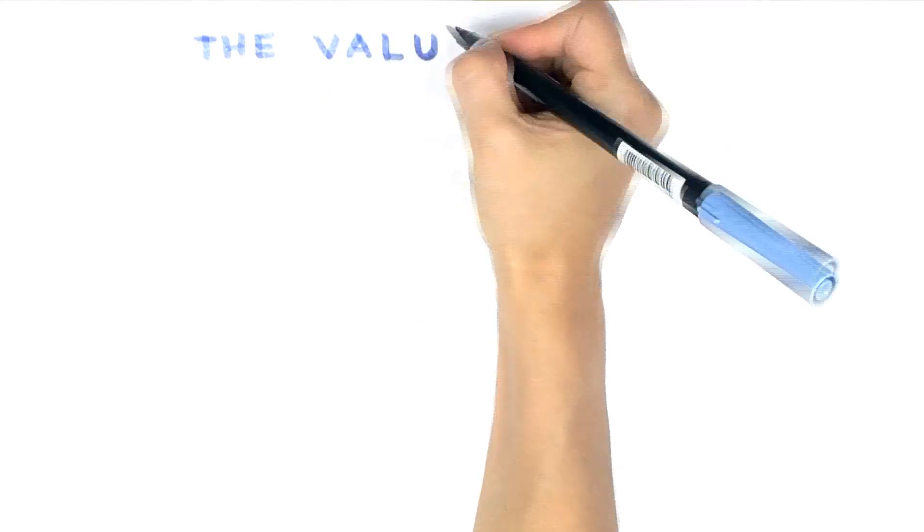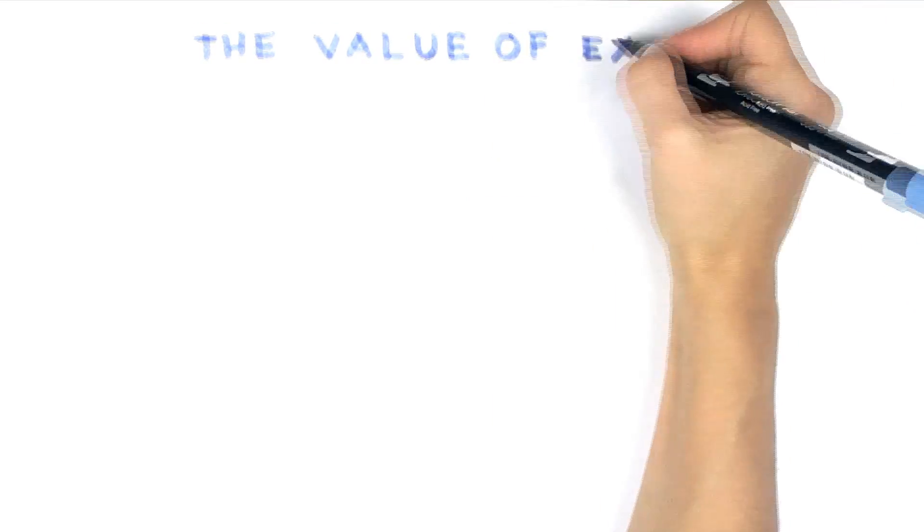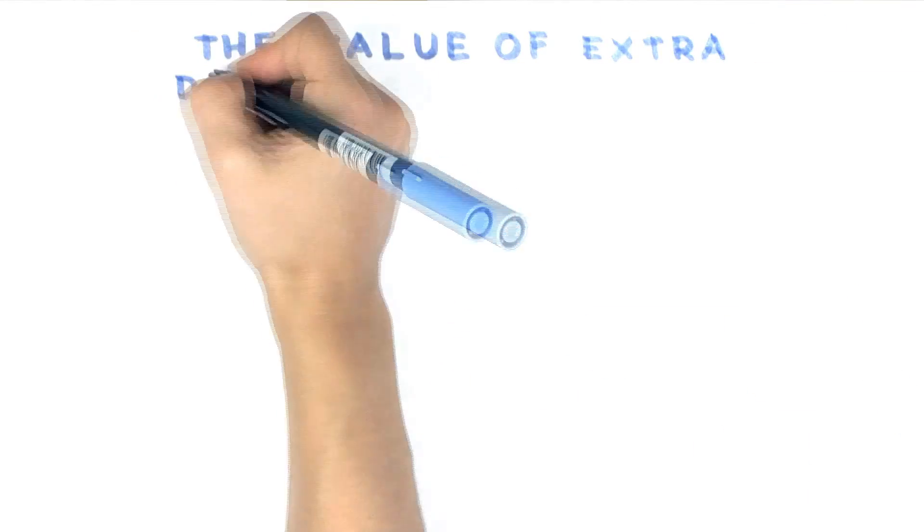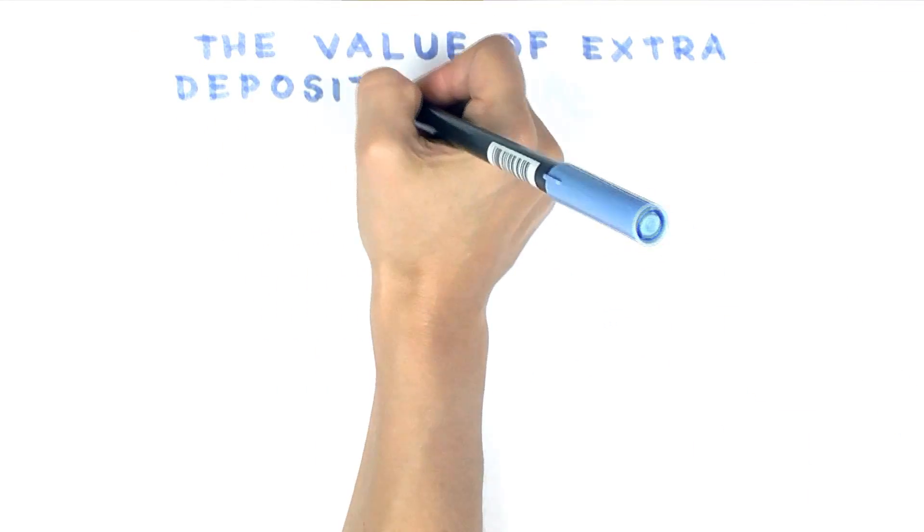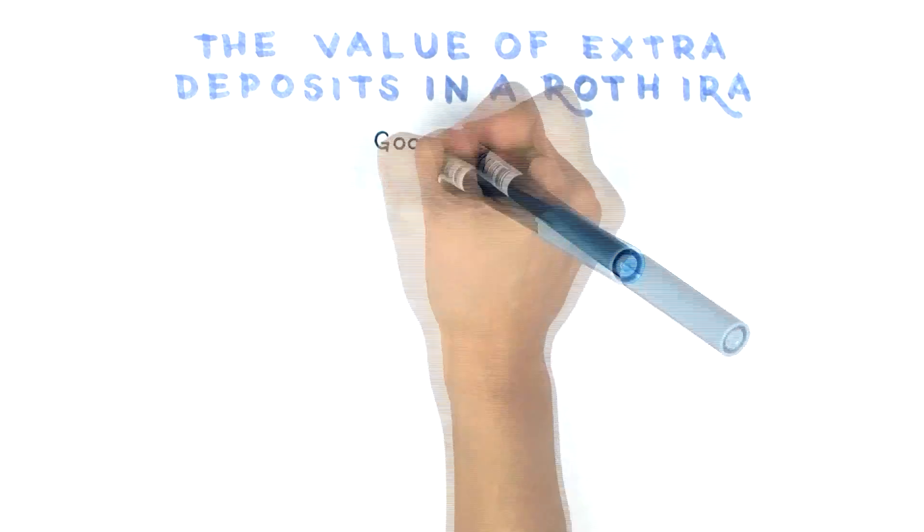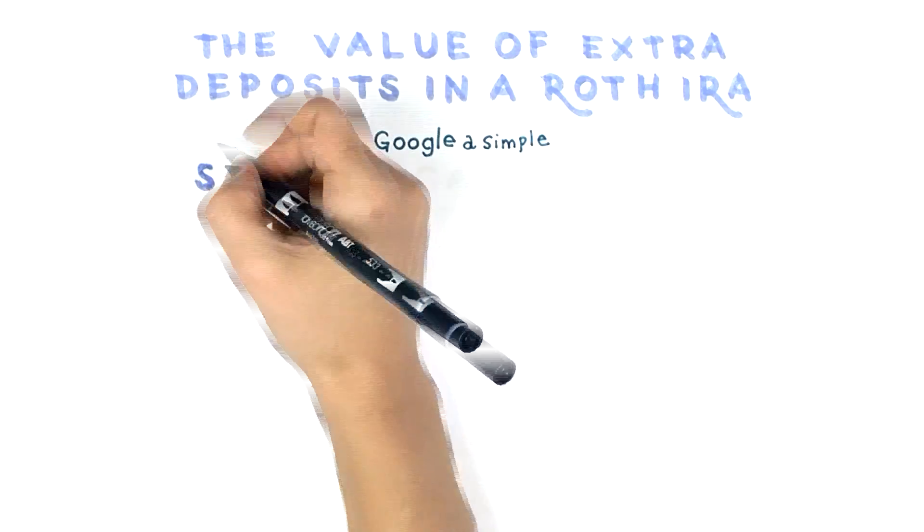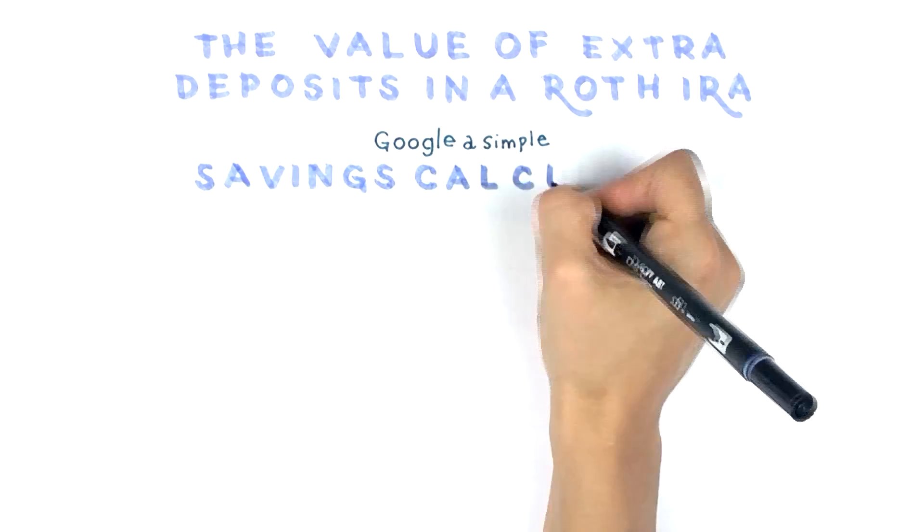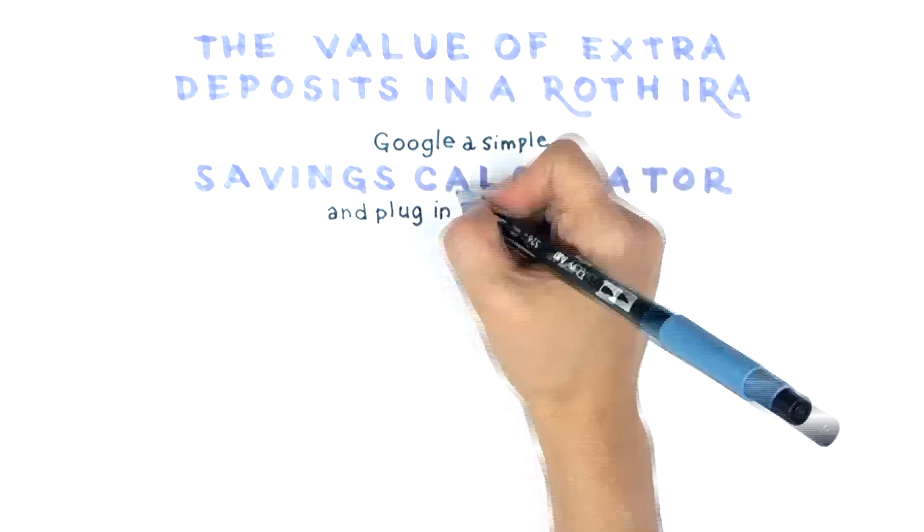Let's work out the values. We've looked at the benefits of a larger studio, so now let's examine the upside of saving more for retirement in a tax-advantaged investment account, such as a Roth IRA. For this, all you need to do is Google a simple savings calculator and plug in some numbers.